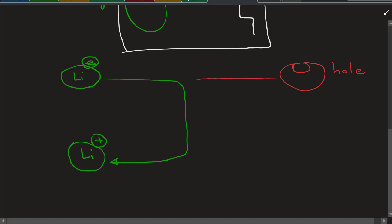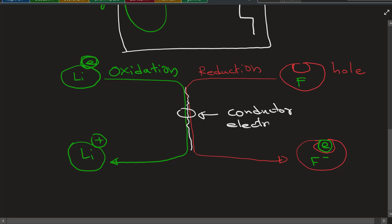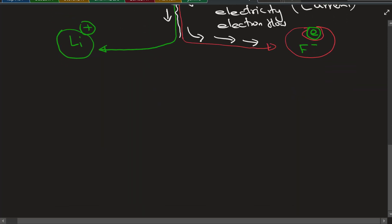The nonmetals grab that electron and become happier. This process is called reduction. Grabbing an electron is reduction, happening in the upper right. The metal gives the electron, so giving away electrons is oxidation. This whole process of pushing an electron from one to the other through a conductor is called electricity. Electrons are flowing through. This is also called DC - direct current. The electrons are moving in one direction only, from metals to nonmetals.